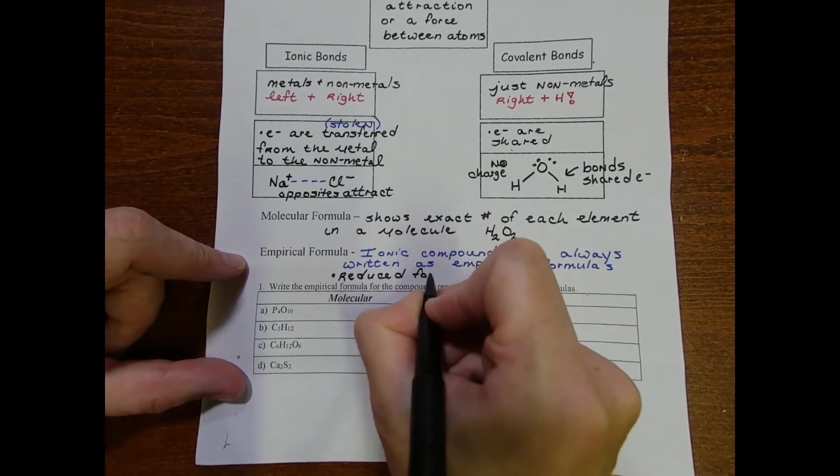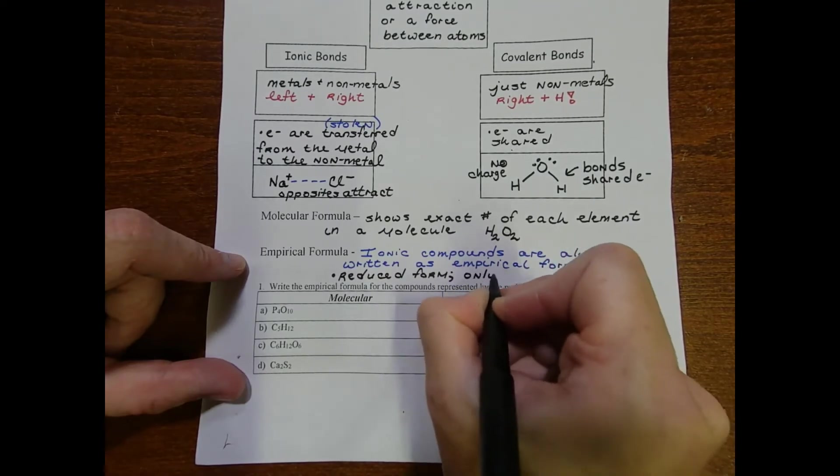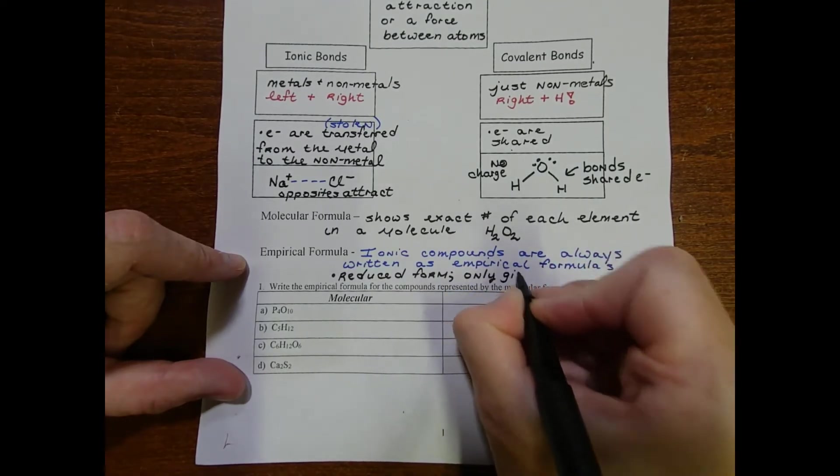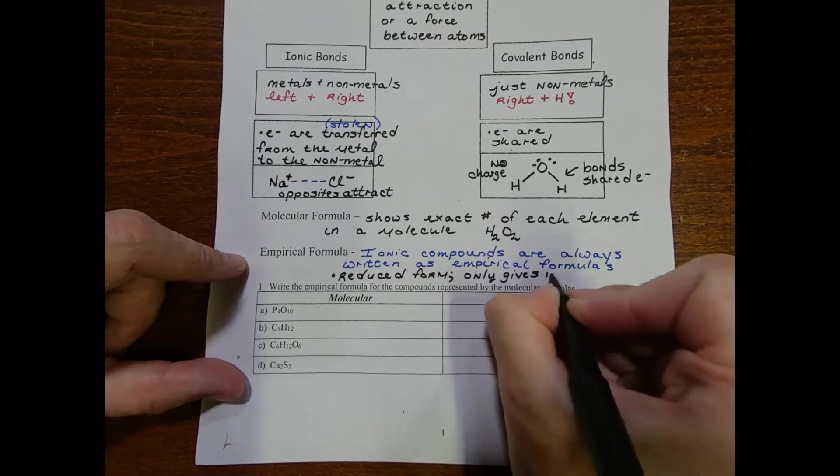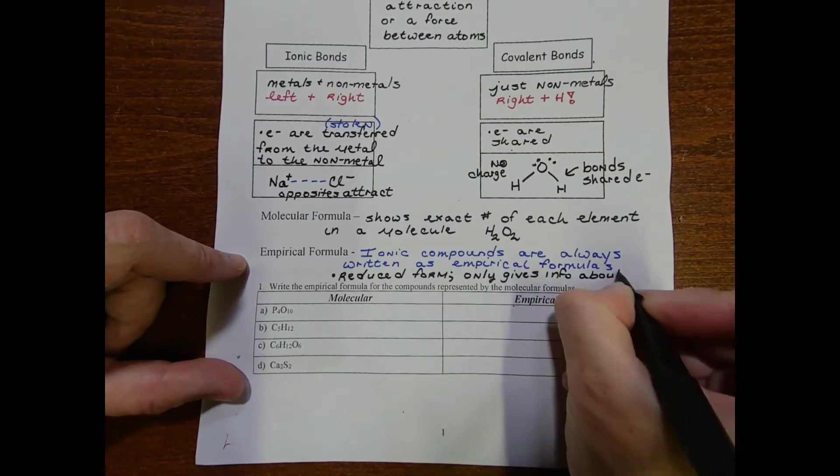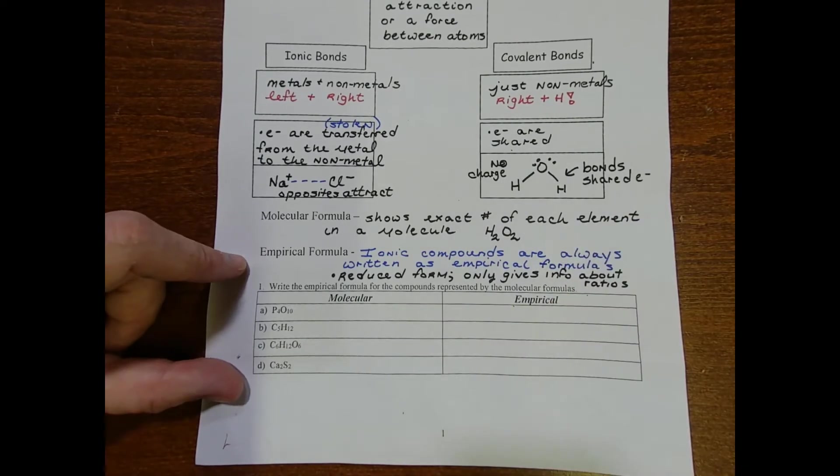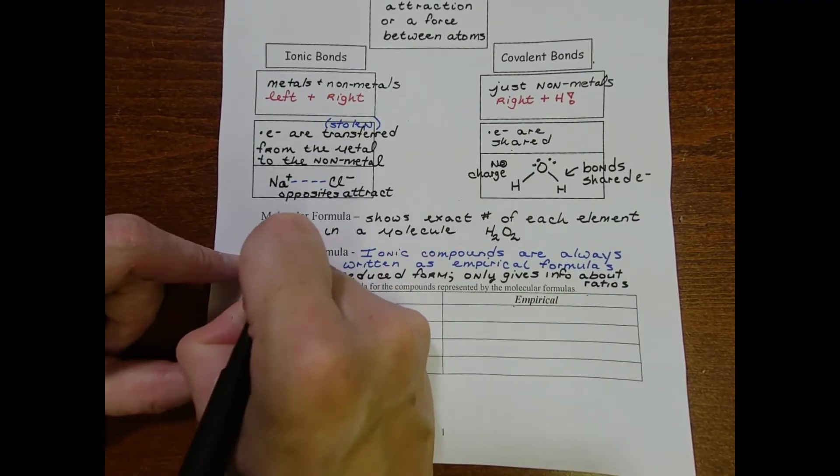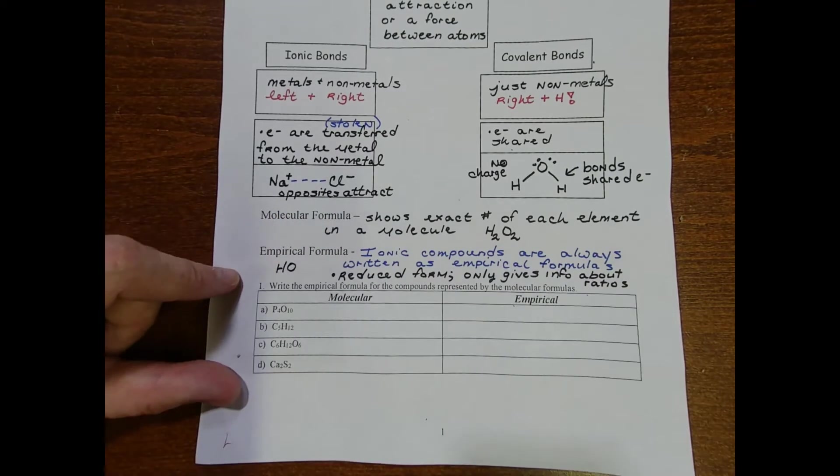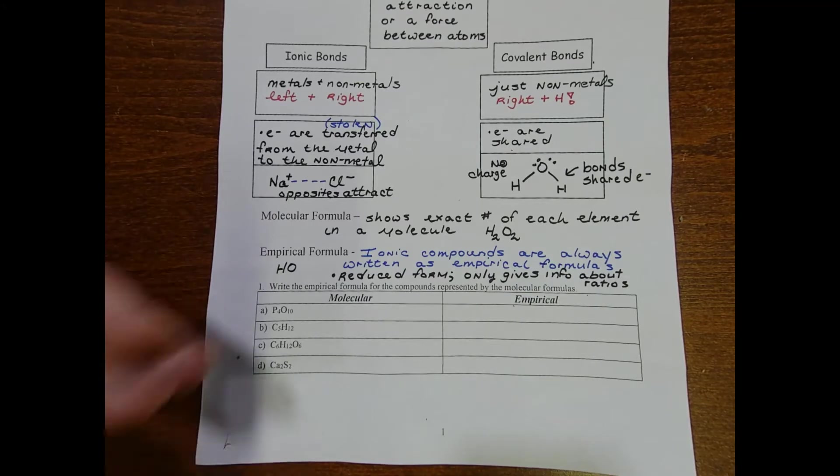It only shows ratios or only gives information about ratios. We could take H2O2 and rewrite it as HO and that would be the reduced form or the empirical formula for that compound.